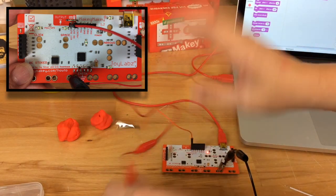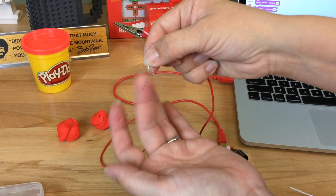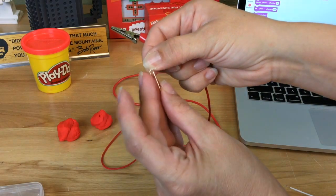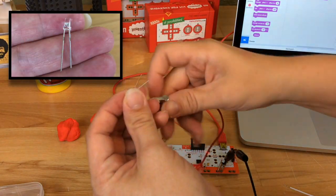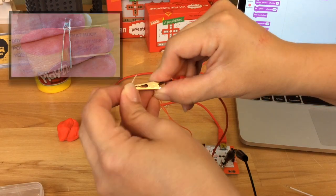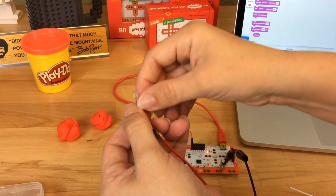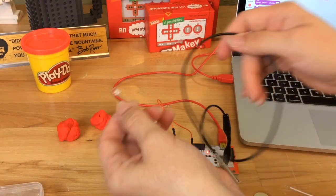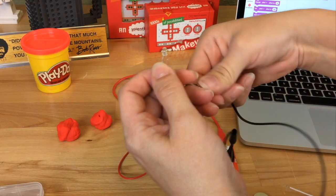Then on my LED, I want to go to the longer leg for my positive connection, and I'm going to take my earth connection to the shorter leg.